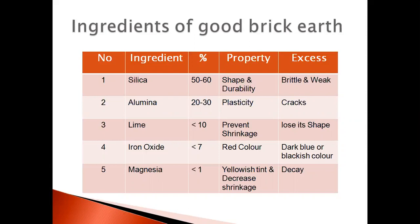Now let's see the properties of these ingredients and what happens if you use excess of each. Silica should be 50 to 60% — it imparts shape and durability to the bricks. But if you use greater than 60% of silica, it makes the brick brittle and weak. The next major ingredient is alumina, which should be used at 20 to 30% — it imparts plasticity to the brick so we can mold it into any shape.